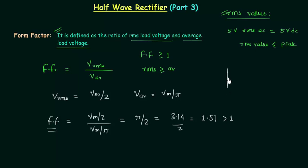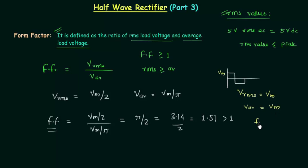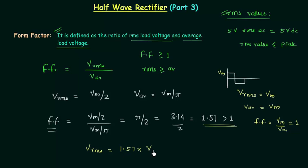If we have a square wave, in the case of a square wave, the RMS value of voltage is equal to Vm, where Vm is the peak voltage, and the average load voltage is also equal to Vm. So form factor is equal to Vm divided by Vm, which equals 1. Form factor is always greater than or equal to 1, and from this result we can say that the RMS value of load voltage is equal to 1.57 times the average load voltage.